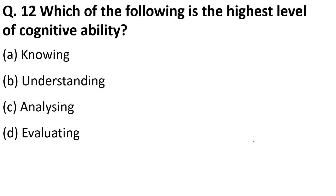Which of the following represents the highest level of cognitive ability — knowing, understanding, analyzing, or evaluating? The correct answer is option D — evaluating is the highest level of cognitive ability.